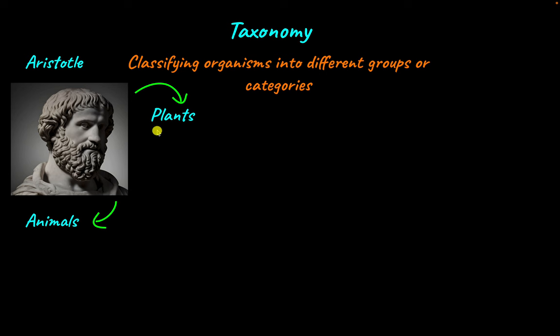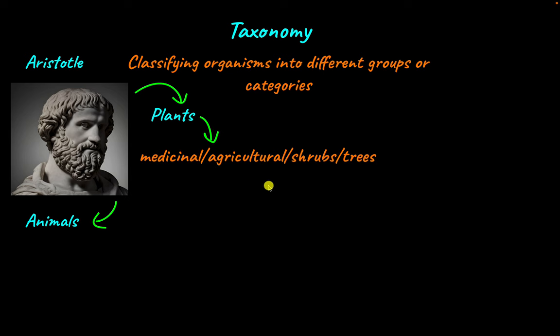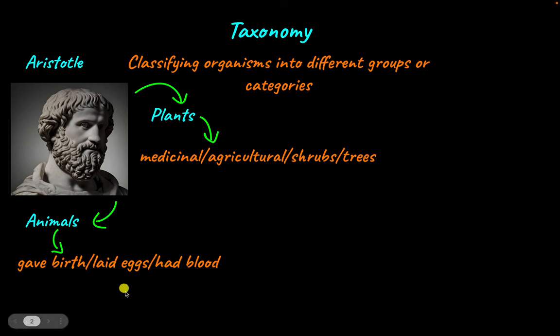He developed this because he saw that some organisms like plants couldn't move — they were stationary — while animals could move, and plants didn't eat food while animals did. He further classified plants into medicinal and agricultural based on their use, and into shrubs and trees based on how they grew. He also classified animals by whether they gave birth or laid eggs, or had blood or didn't have blood.